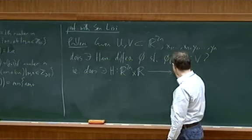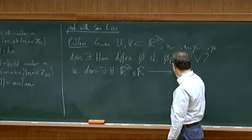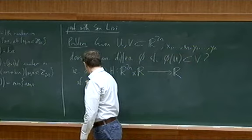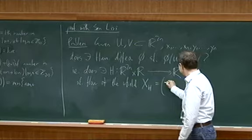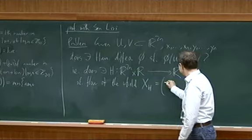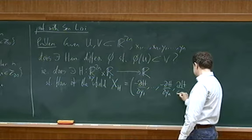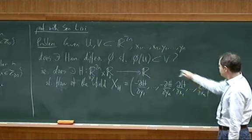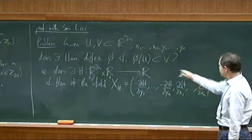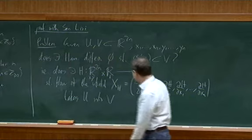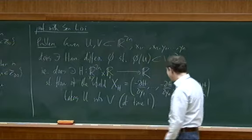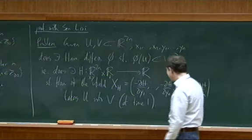Hamiltonian diffeomorphisms form a group. Does there exist a function defined on R²ⁿ × R, such that the flow of the corresponding vector field X_H — where the first component is negative dH/dy — takes U into V? You can always scale things and say time one.